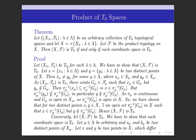Let each coordinate space be T0; then we have to prove that the product space is T0. We must show that for any two distinct points in X, there exists an open set in X containing one of the points but not the other. Let x = (xλ) and y = (yλ), λ∈Λ, be two distinct points of X. Since they are distinct, not all coordinates can be equal, so there exists some μth coordinate such that xμ ≠ yμ for some μ∈Λ.